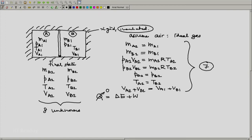W will be expansion work plus other work. Because the system is rigid, expansion work is 0. Because the system is rigid. What about the other work? Let us assume it to be 0. And that means we can get rid of this W term.